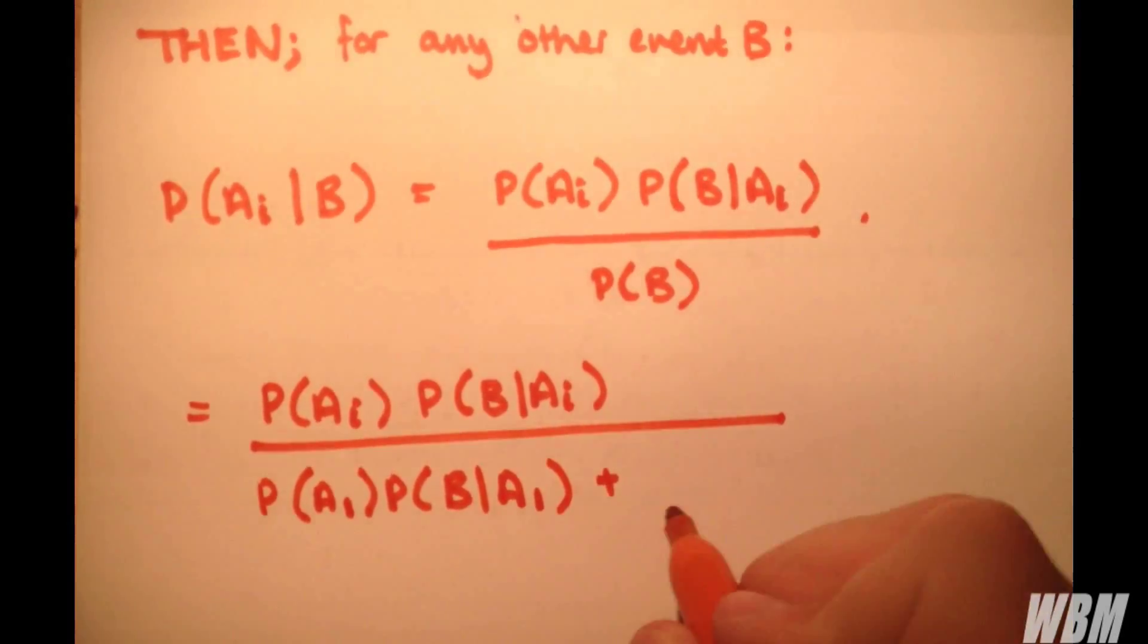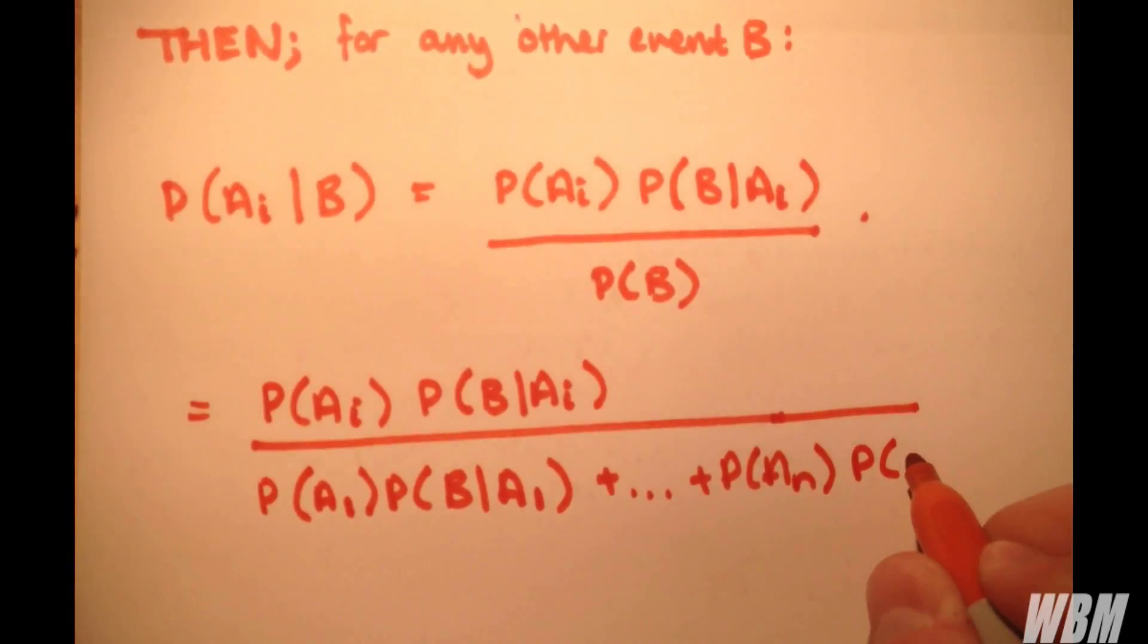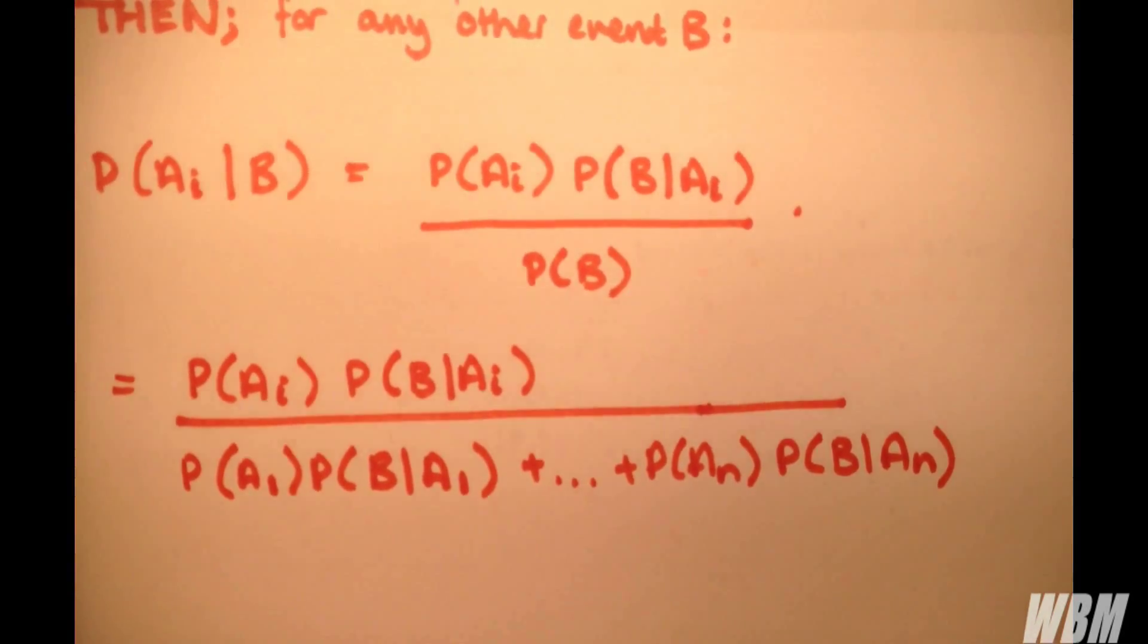And we do that for A2, and so on, so on, all the way up to the final An. Probability An, probability of B given An.